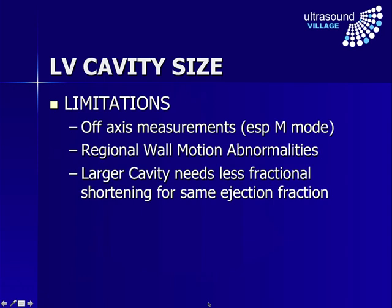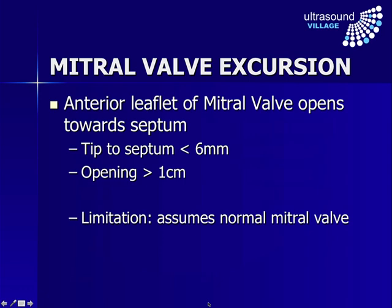What are the other things we can look at to help confirm our estimates? One is the mitral valve excursion. Looking at the anterior leaflet of the mitral valve, it opens up towards the septum — normally the tip of that valve will go to within less than six millimetres of the septum, and the overall opening between the anterior and posterior leaflets is greater than a centimetre. If there is greatly reduced cardiac output and flow through the heart, the valve won't open as fully. This assumes a normal mitral valve — if you have mitral stenosis, for example, the valve won't open fully due to valve pathology rather than poor function.